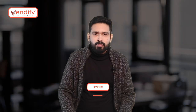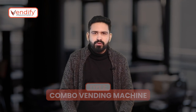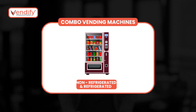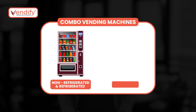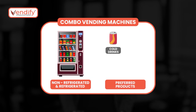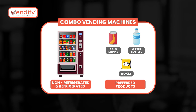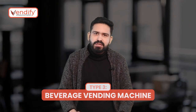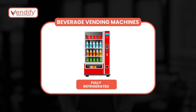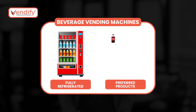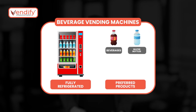Secondly, we have the combo vending machines. These machines have both refrigeration and non-refrigeration functions in them, so you can put beverages like cold drinks or water bottles inside them along with snacks. Moving ahead, we have beverage vending machines. These machines are fully refrigerated and can be used to put cold products such as beverages, water bottles, ice creams, etc.